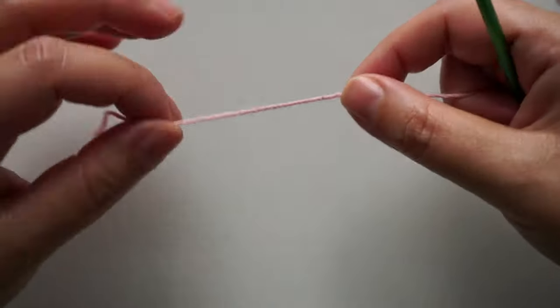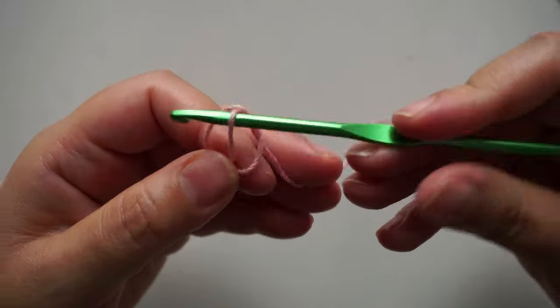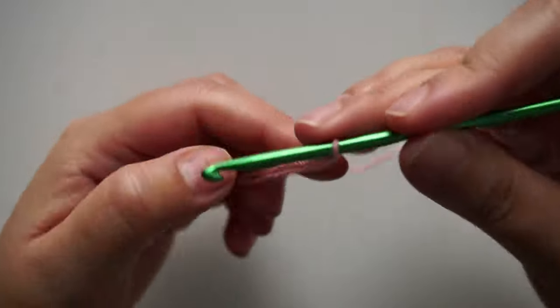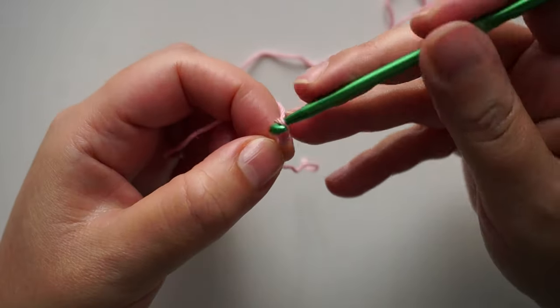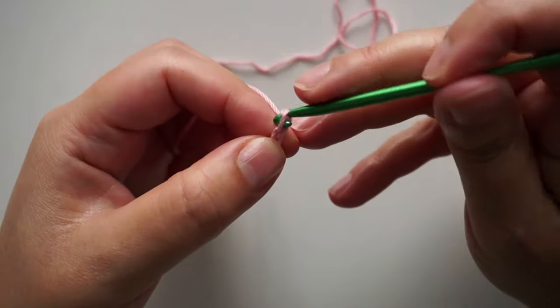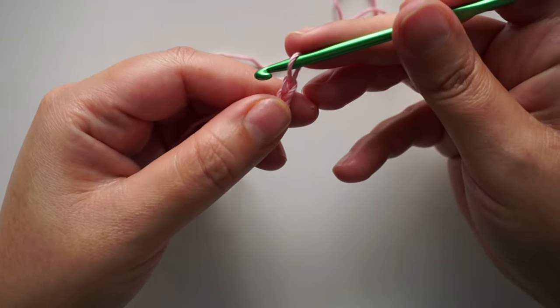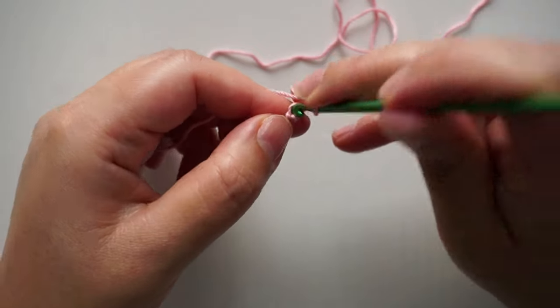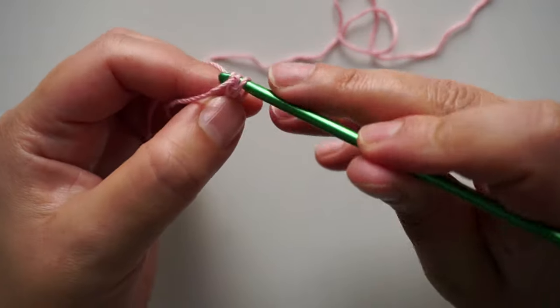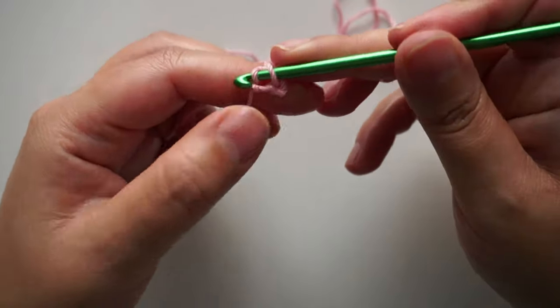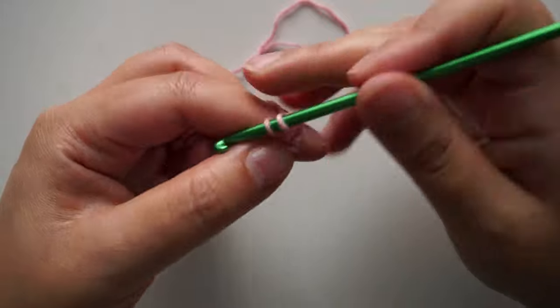As always we'll make a slip knot and I will chain two. One and two, and I will make two single crochet in the first chain from the hook. One single crochet and two single crochet.